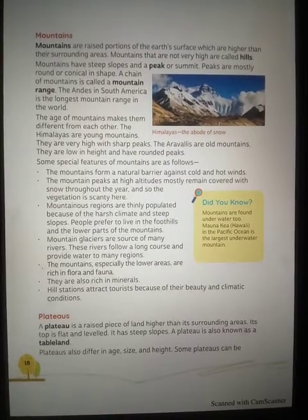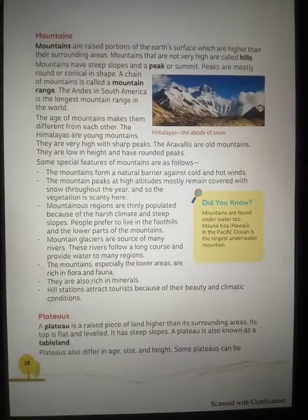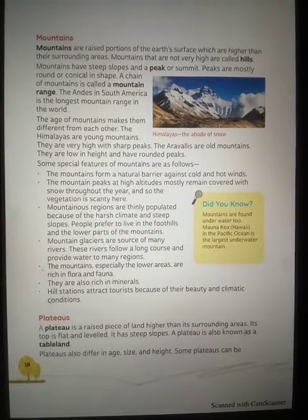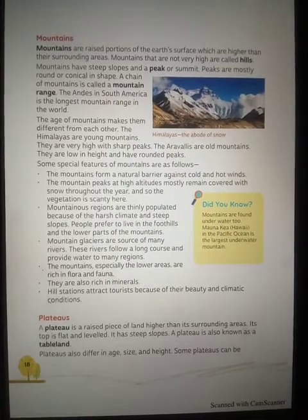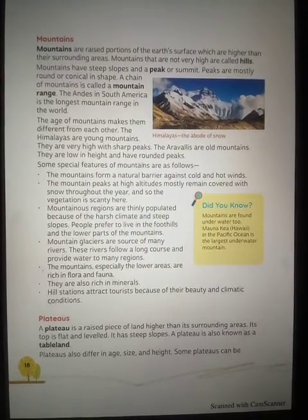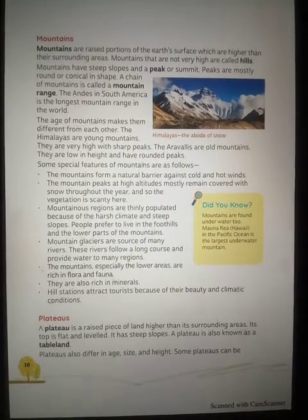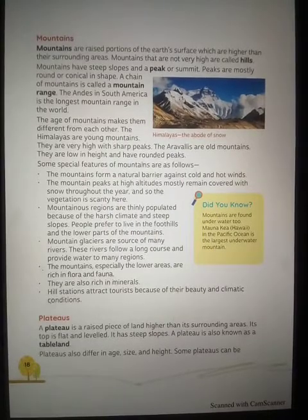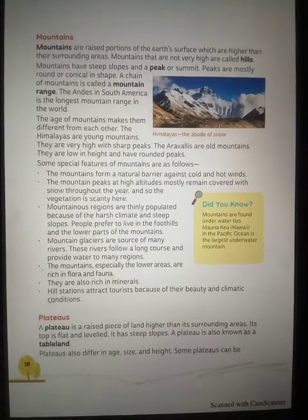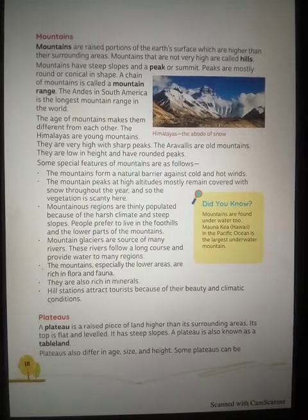Mountains that form a line or chain are called a mountain range. The longest mountain range in the world is in South America. Mountains also differ from each other in age — for example, the Himalayas are young mountains. Young mountains tend to have high, sharp peaks.